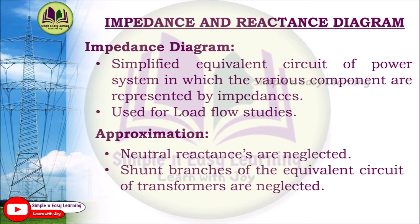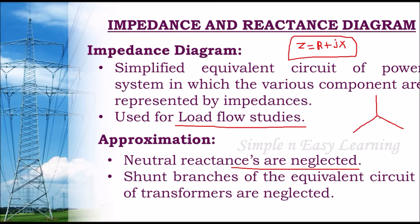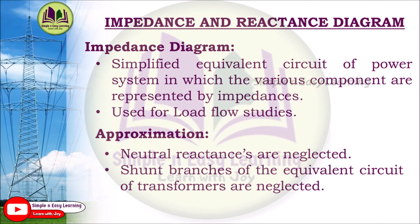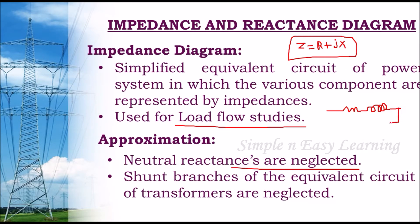When drawing an impedance diagram, two approximations are made. First, neutral reactances are neglected. In a star-connected system, the neutral wire may have some reactance — called reactance grounding — but this reactance is neglected in the impedance diagram. Second, the shunt branches of the equivalent circuit of transformers are neglected. The transformer equivalent circuit has resistance, reactance, and a shunt parameter; this shunt parameter is eliminated when drawing the impedance diagram.